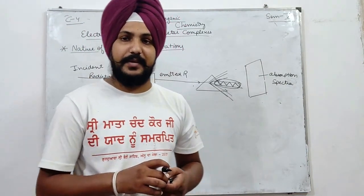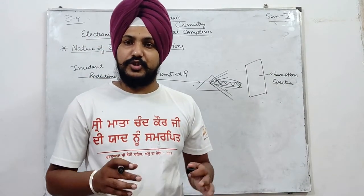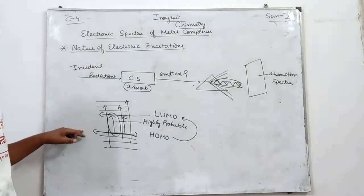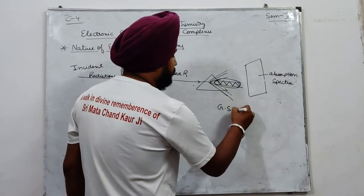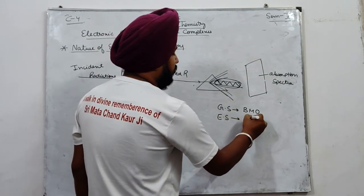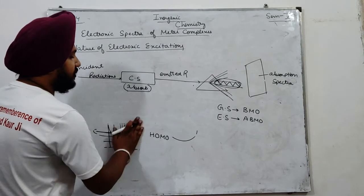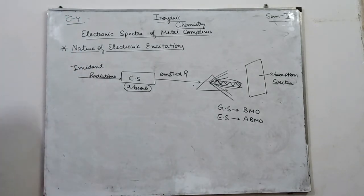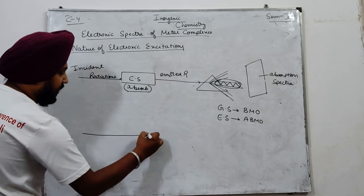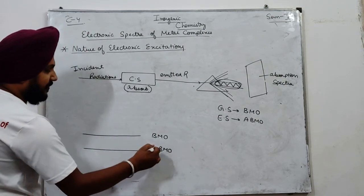This is the nature of electronic excitations. Now I will show you different types of molecular orbitals in complex molecules. The excited states of complex molecules are called anti-bonding molecular orbitals. The ground state orbitals are the bonding molecular orbitals.